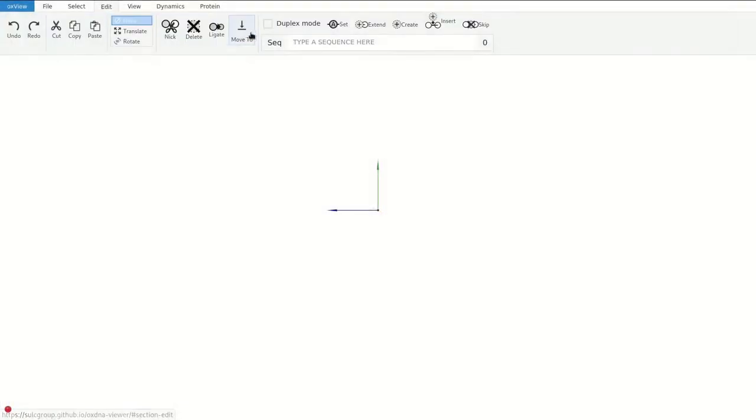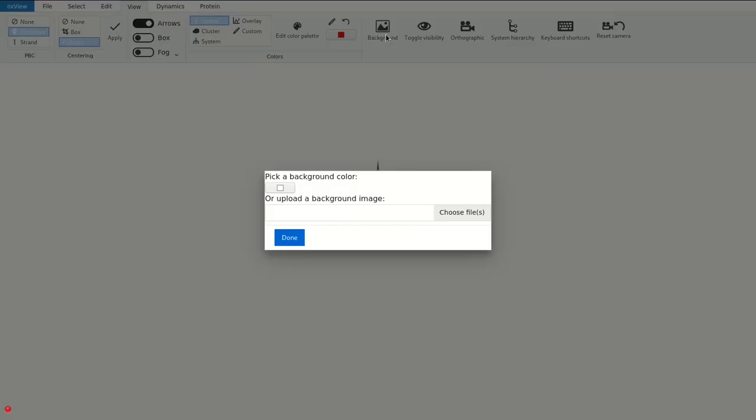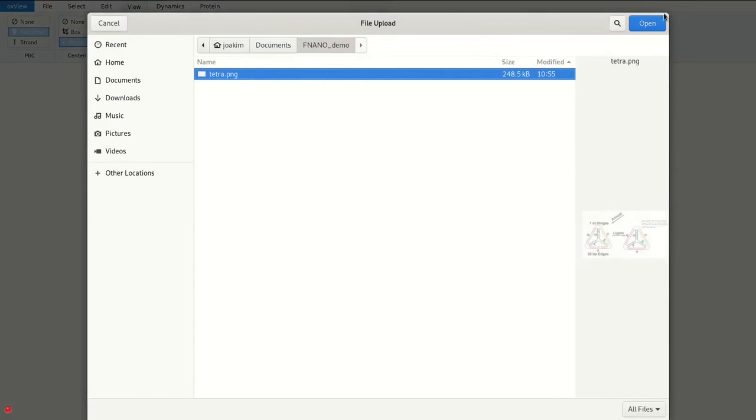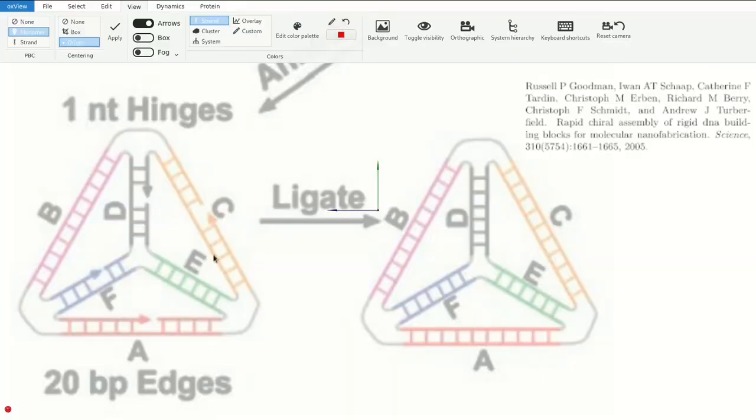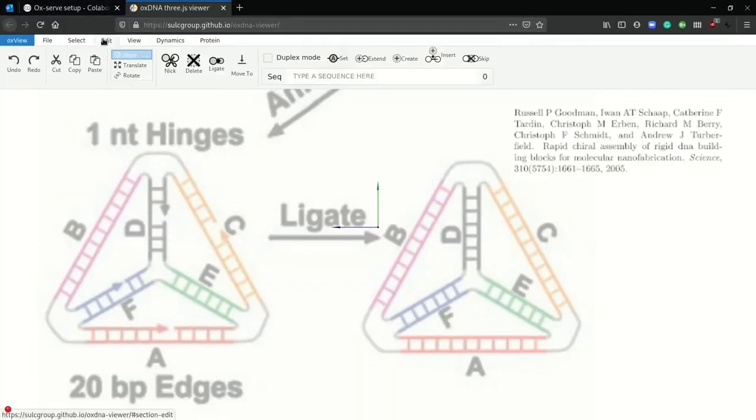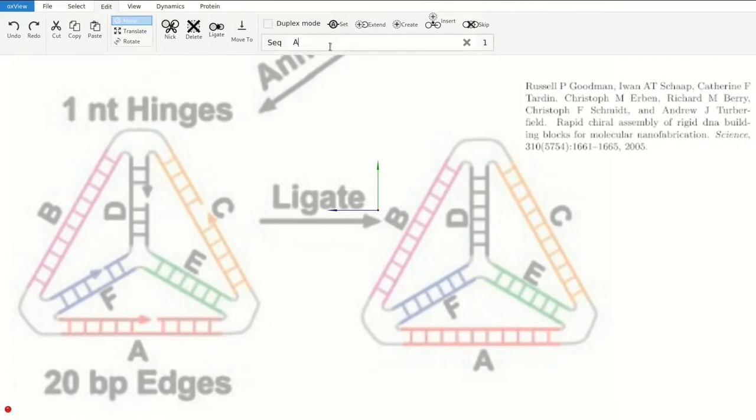To start with, let's load some kind of background image as a reference. I prepared this tetrahedron shape here from the Turberfield Lab in 2005. You can see that there is a 20 base pair edge on each side, and therefore we will start by creating a 20 base pair helix.